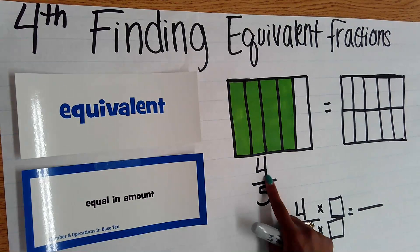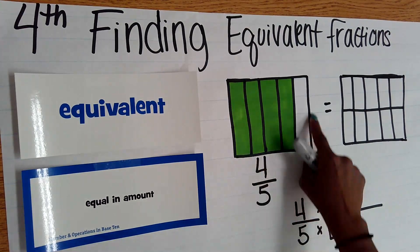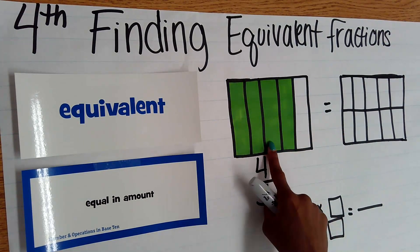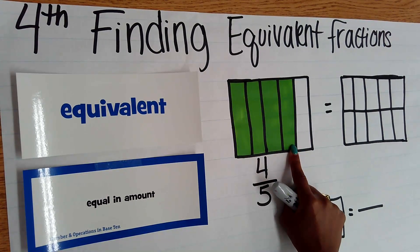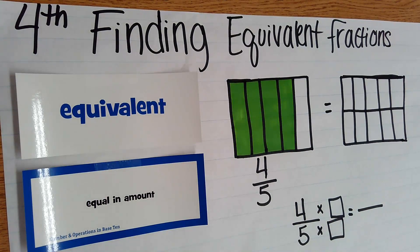So on this model, you can see this hole is broken into one, two, three, four, five parts, which gives us our denominator. Four of them are shaded in, which gives us our numerator.